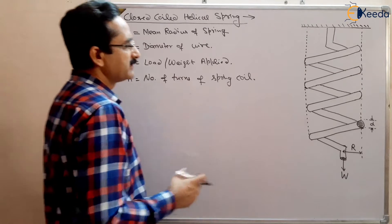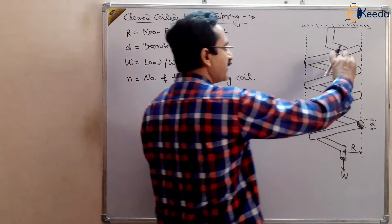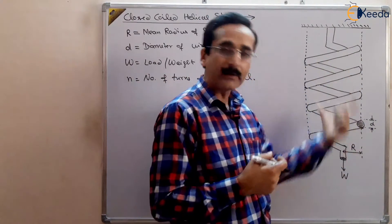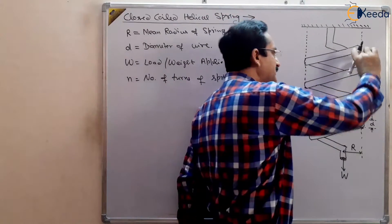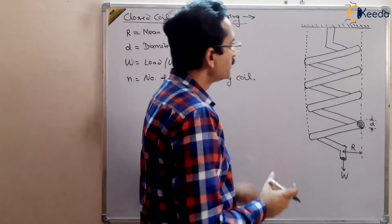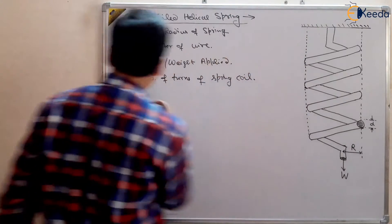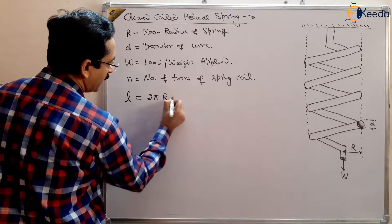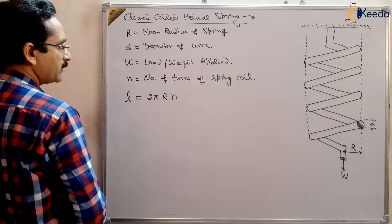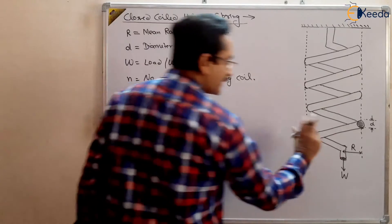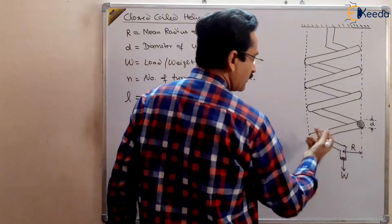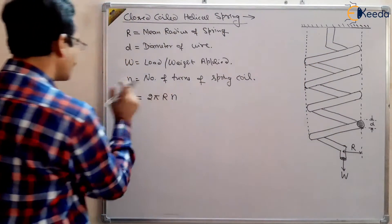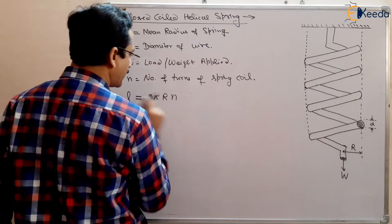This is a closed coil helical spring — the spacing between coils is very small, though I have shown larger spacing here for clarity. The total length of the spring coil will be L = 2πRN, where 2πR is the circumference multiplied by N, the number of turns. So L = 2πRN is the length of the spring.